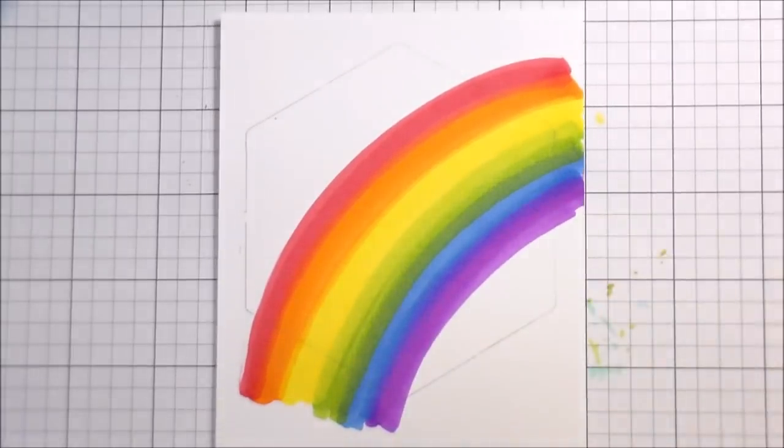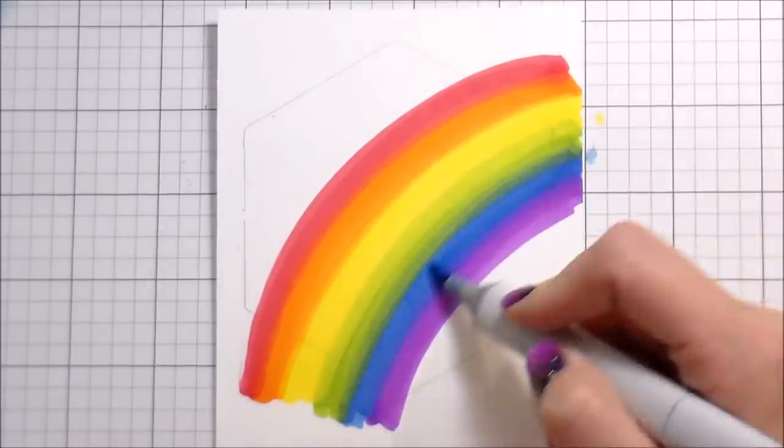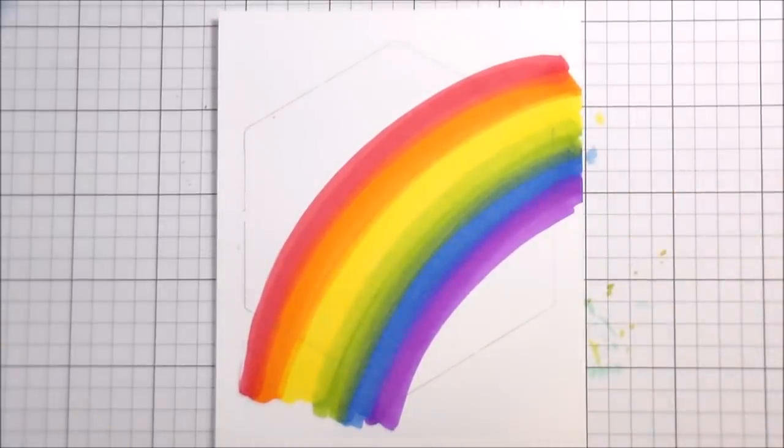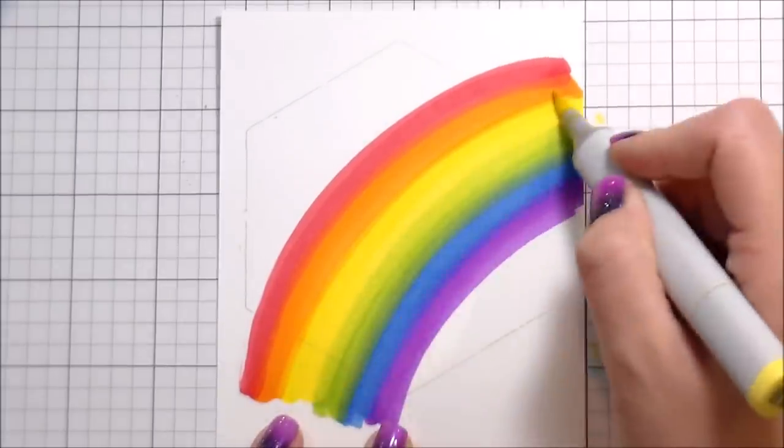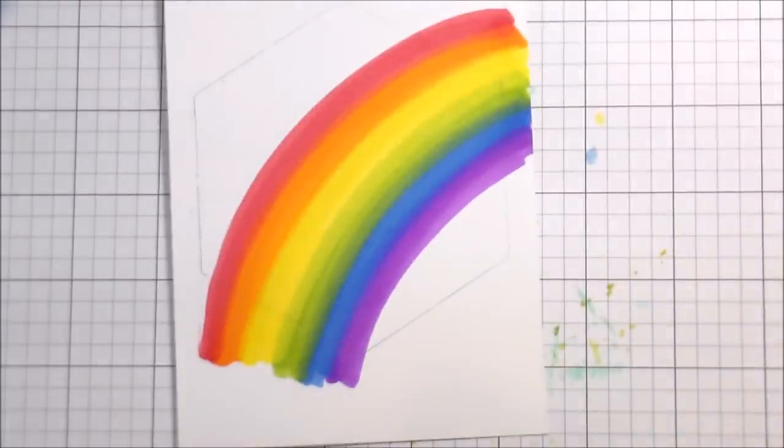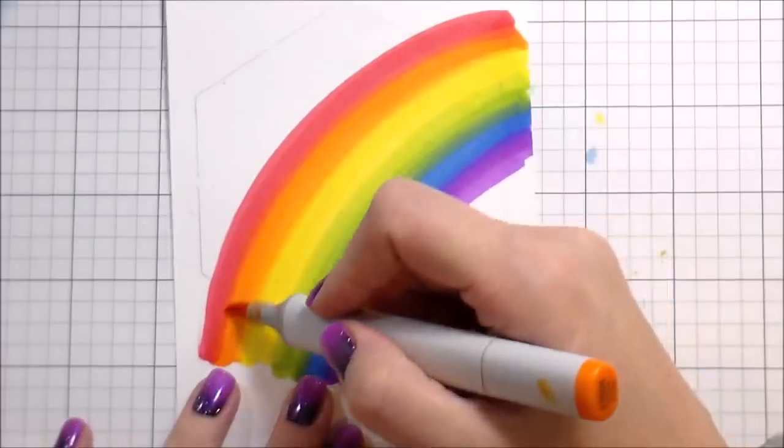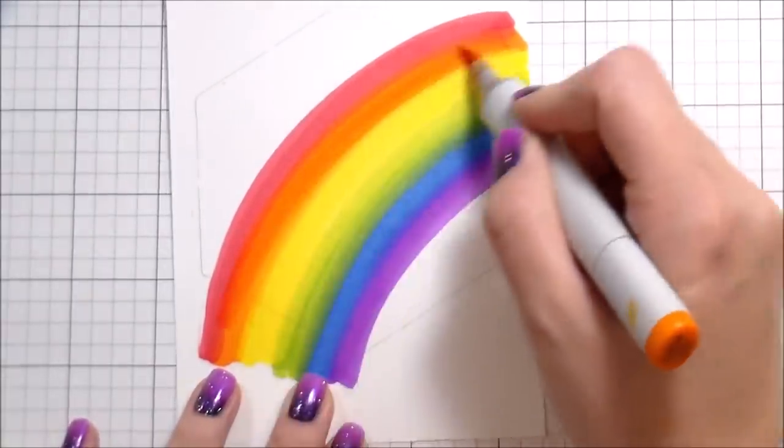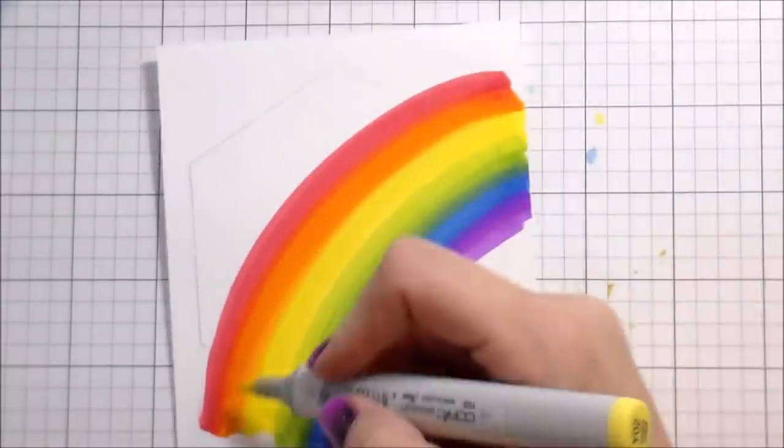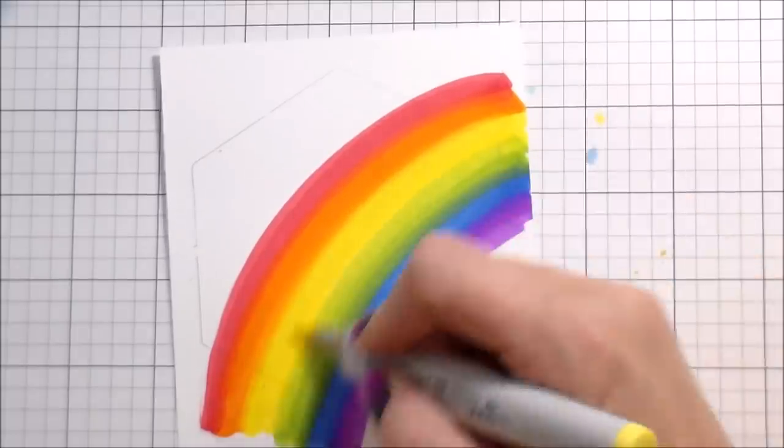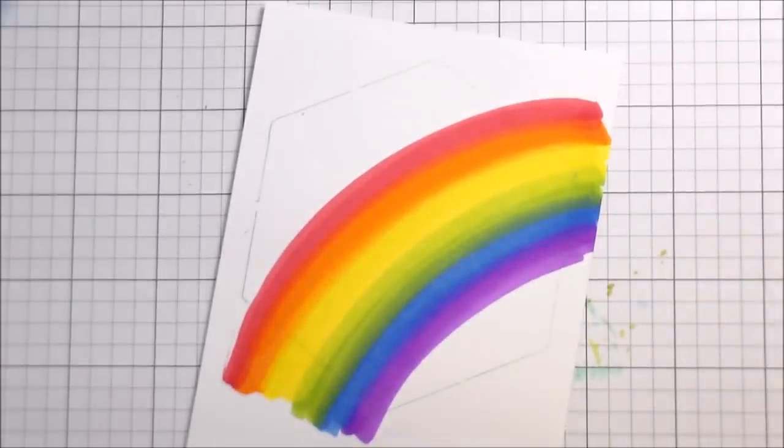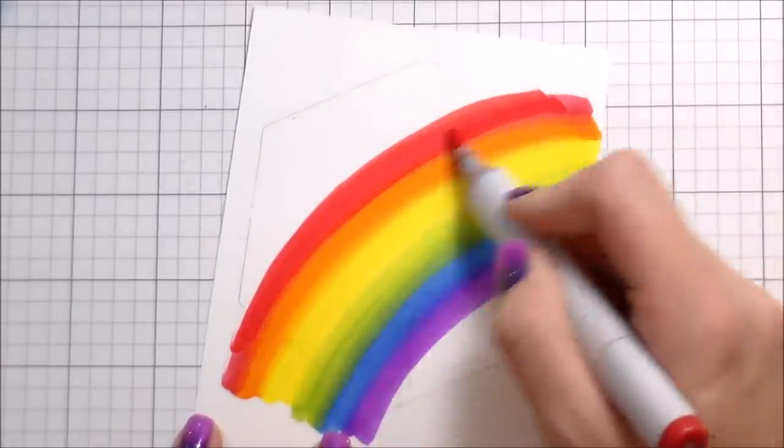You're going to see me go over these a couple of times to get a good blend. That's really the key to it. If you find you have two colors that aren't blending well, it's not necessarily that you need a transition color in between them, it's more just continually going over them. Copics blend in the fibers of the paper, so sometimes you need to put down a lot of ink to get them to blend well.